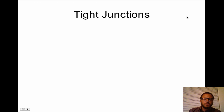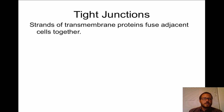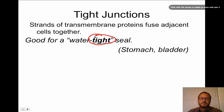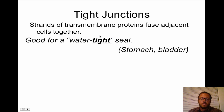The first type of cell junction is called a tight junction. You have strands of transmembrane proteins that fuse adjacent cells together, kind of like stitching them together. These are good for a water-tight seal — a super tight seal. This would be found in places like your stomach or your bladder.